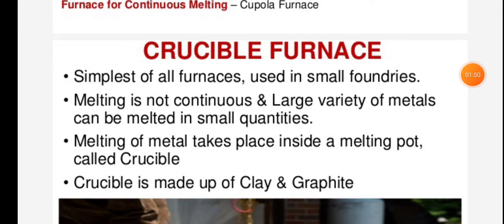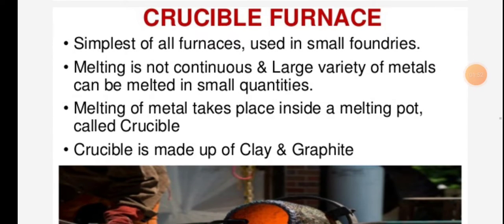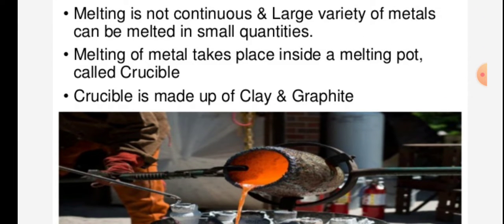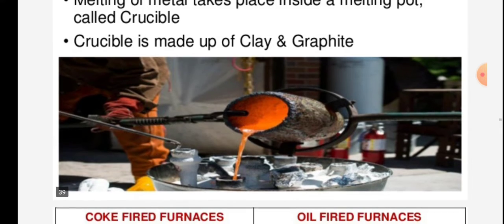The crucible furnace is the simplest of all furnaces. It is used for small quantities, melting is not continuous, and a large variety of metals can be melted in small quantities. Melting of metal takes place inside a melting pot called a crucible.